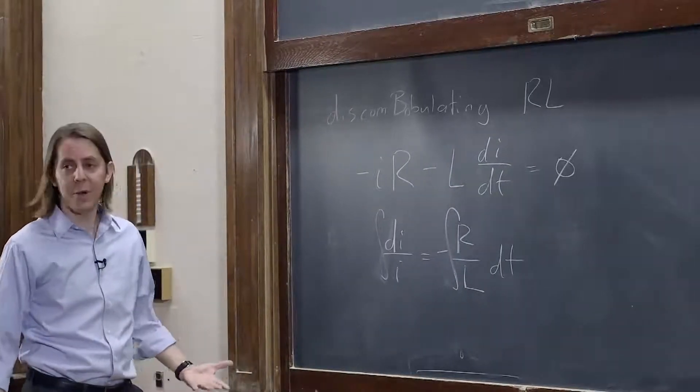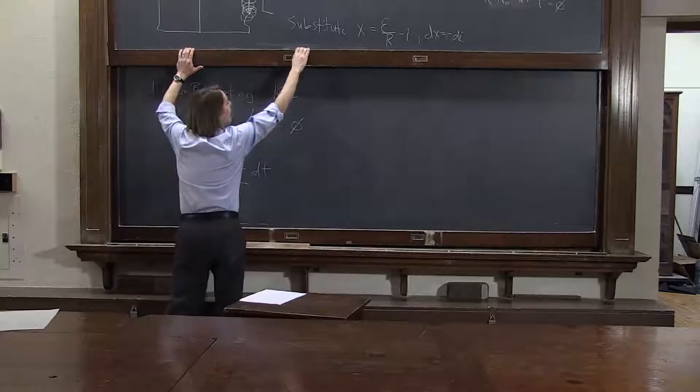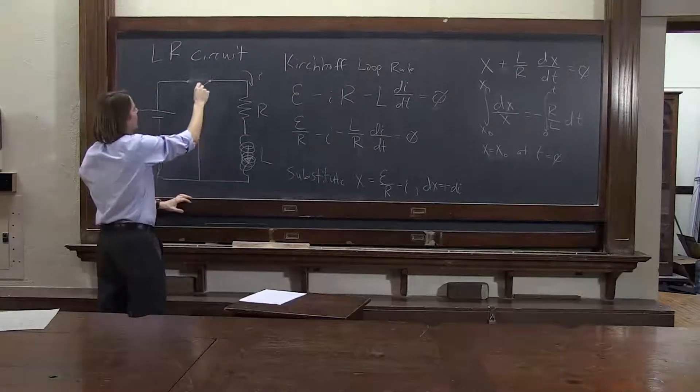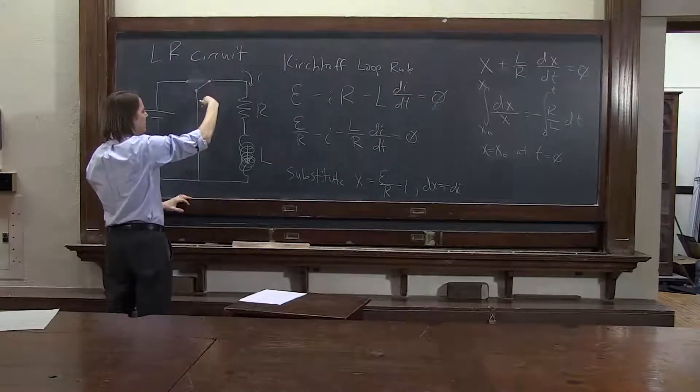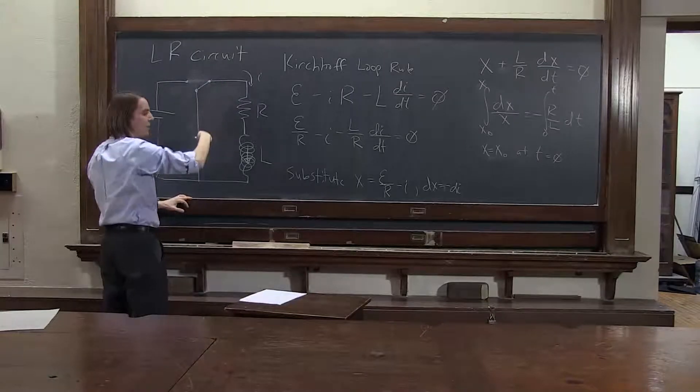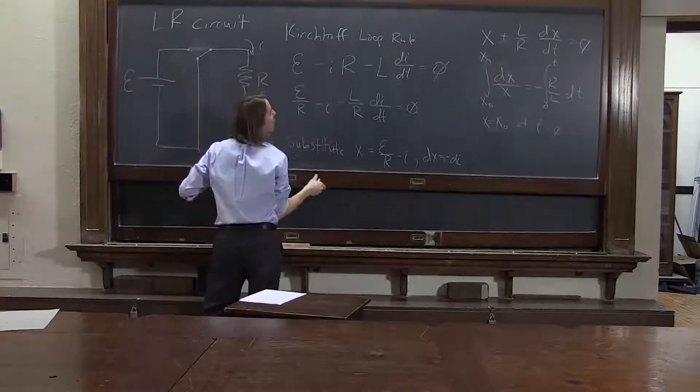And now we need these boundary conditions. We need to say that we had, at time t equals zero, is when we flip the switch. So at time t equals zero, we had some current. We had a current i0.